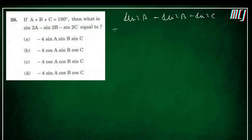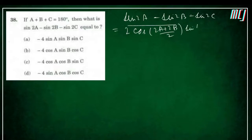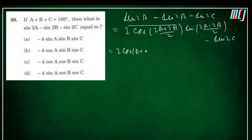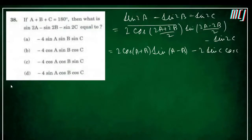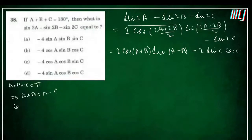Applying the sum-to-product formula on sin2A − sin2B: 2cos((2A+2B)/2)·sin((2A−2B)/2) − sin2C = 2cos(A+B)·sin(A−B) − 2sinC·cosC. Since A+B = π−C, cos(A+B) = cos(π−C) = −cosC.